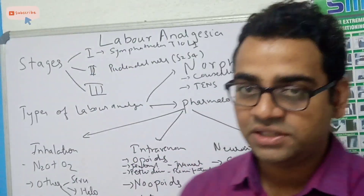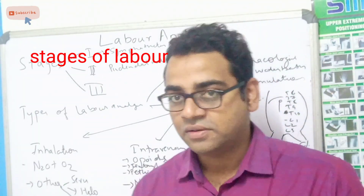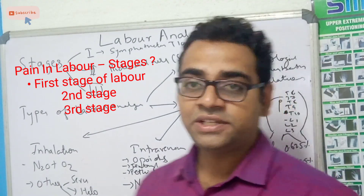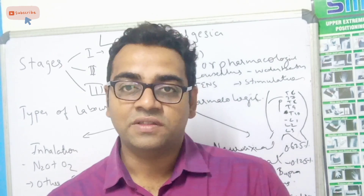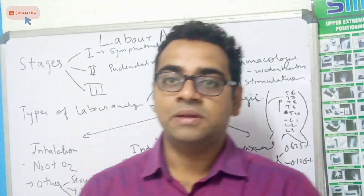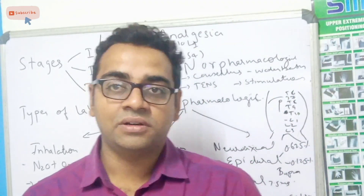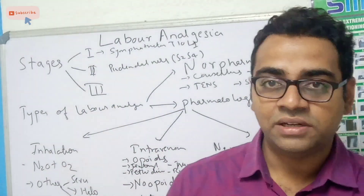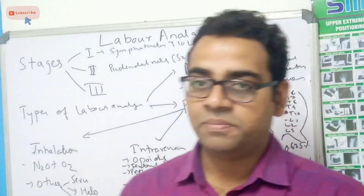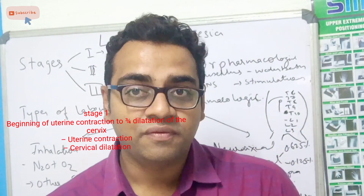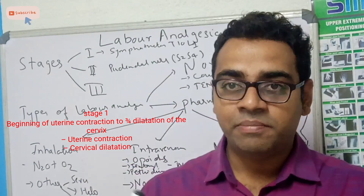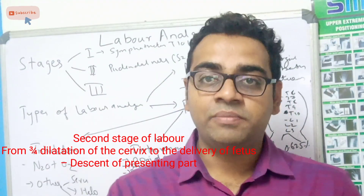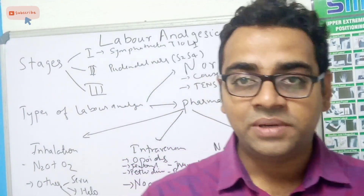We should know what are the stages of labor to understand the process involved in labor analgesia. There are three stages in labor: stage one, stage two, and stage three. Stage one is from the onset of labor pain till the head of the baby gets engaged in the pelvis. Stage two is from engagement to delivery of the baby. Stage three is from delivery of the baby to delivery of the placenta.